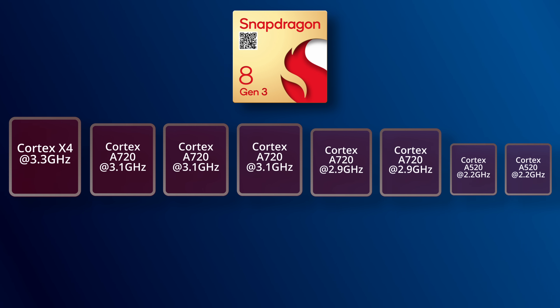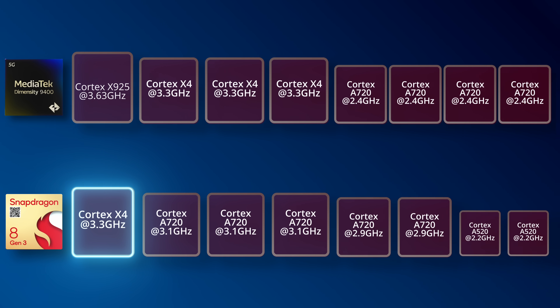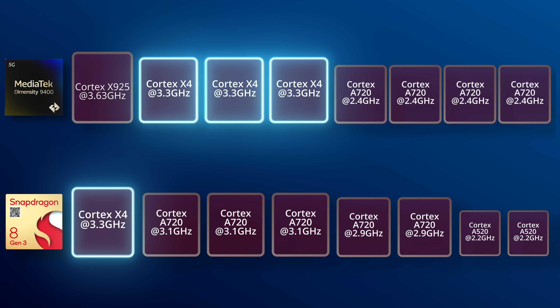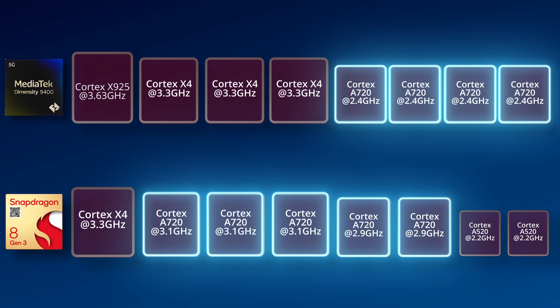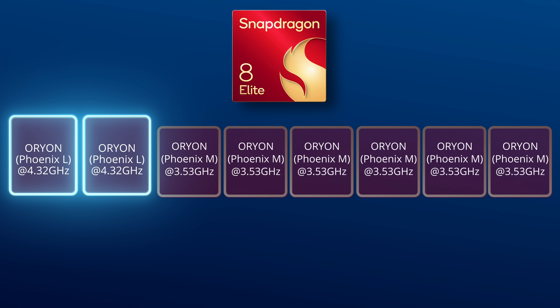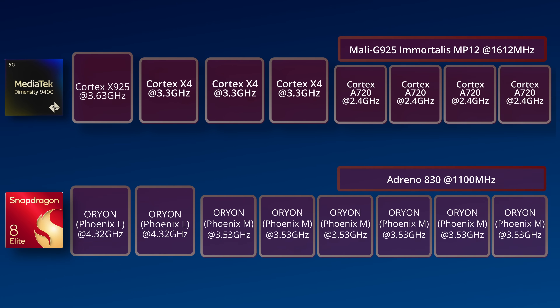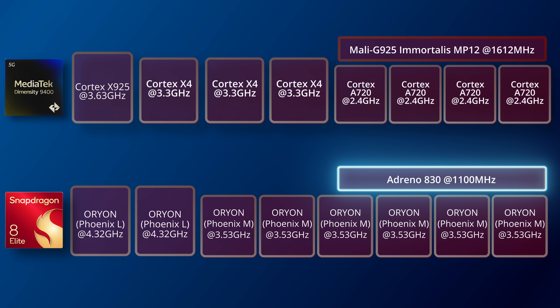This is interesting — for the Snapdragon 8 Elite, Qualcomm has used custom Orion cores instead of standard ARM cores. There are 2 Fenix L prime cores at 4.32 GHz, and 6 Fenix M performance cores at 3.53 GHz. For the GPU, MediaTek uses the Mali G925 Immortalis MP12, while Qualcomm uses the Adreno A30.